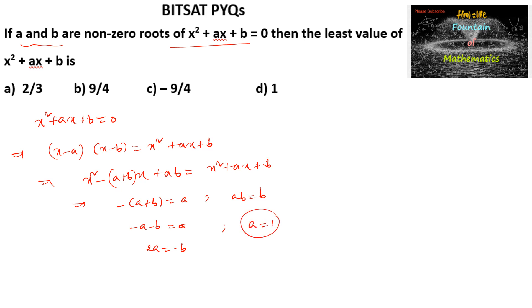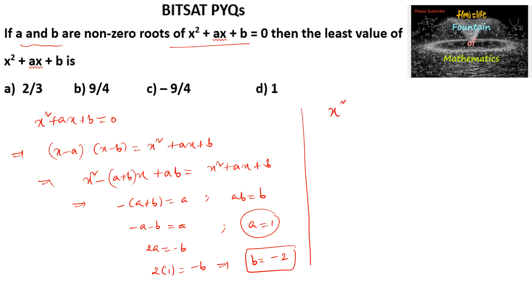When a = 1, we get 2(1) = -b, so b = -2. Therefore when a = 1 and b = -2, the function becomes f(x) = x² + x - 2.